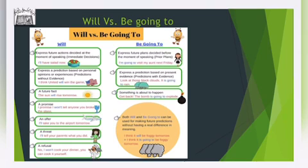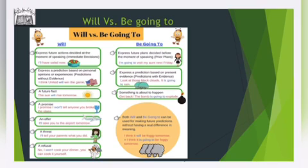So, will versus be going to. Will expresses future actions decided at the moment of speaking — immediate decisions, like: I'll have salad now. It also expresses a prediction based on personal opinions or experiences — predictions without evidence, like: I think United will win the game. Also a future fact, a promise, or an offer or a threat.